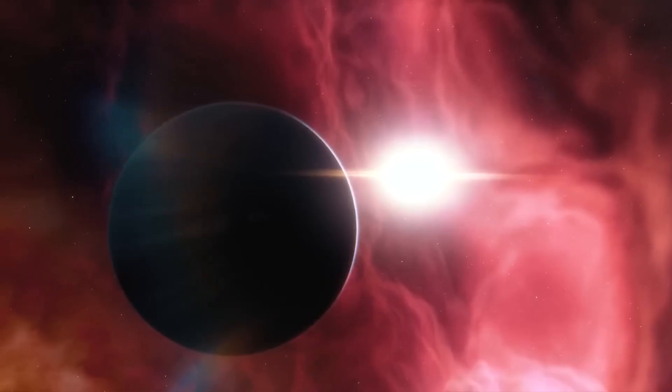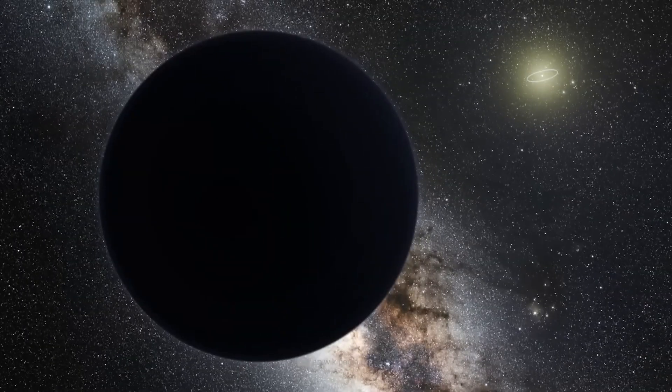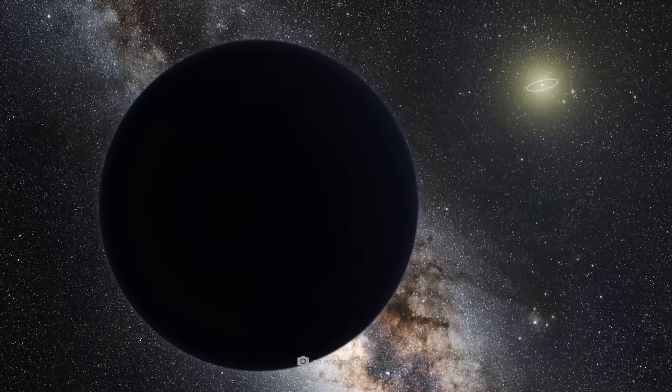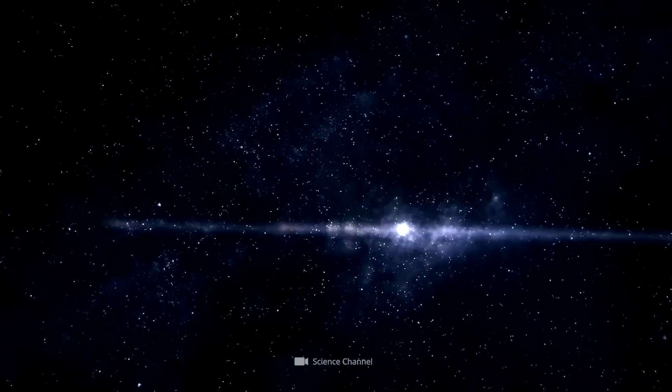Moons and satellites: Neptune has a diverse moon system, including Triton, which is the seventh-largest moon in the solar system. The unique backward orbit of Triton and its geological activity pose questions about its origin and evolution.